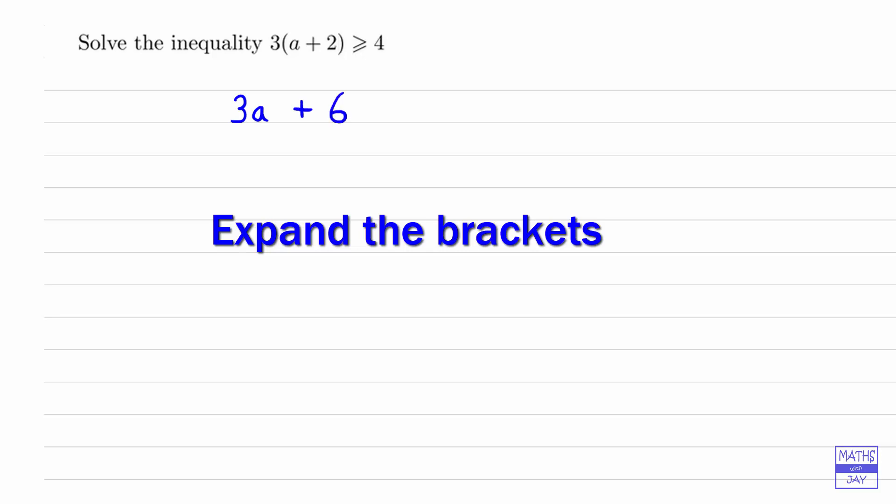Remember we're trying to get the a on its own, so we would subtract 6 from both sides. We've got 3a is greater than or equal to 4 subtract 6, so that would be -2.